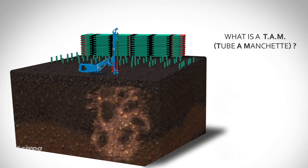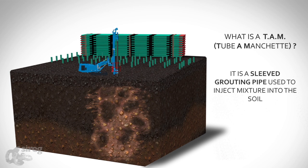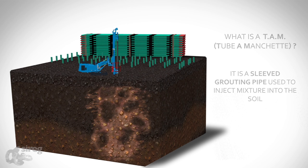What is a TAM or Tube Amanshette? A TAM is a rigid PVC sleeved grouting pipe with special sleeves mounted on the pipe's perforations used to inject cement mixtures into the soil.